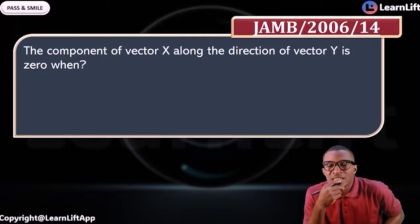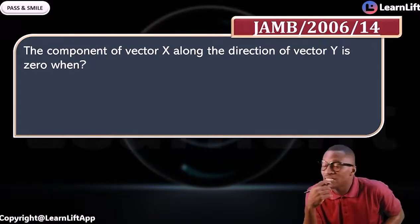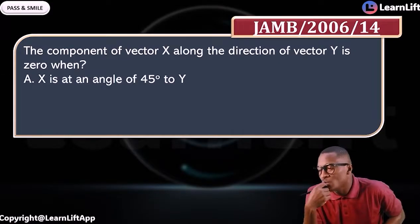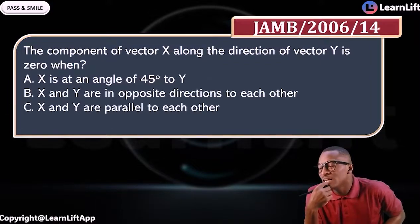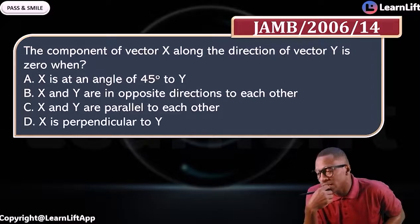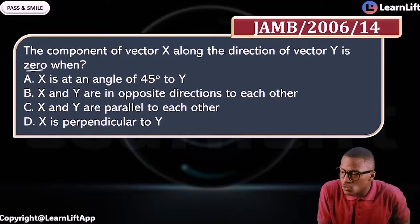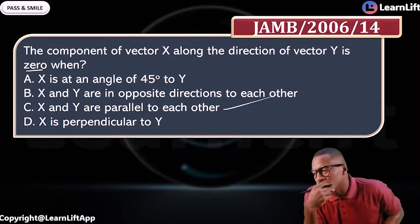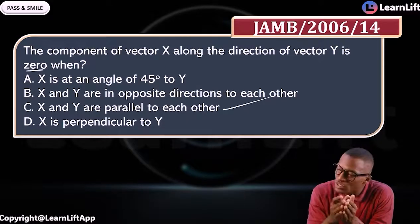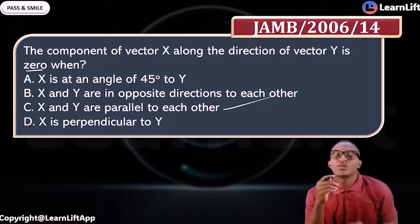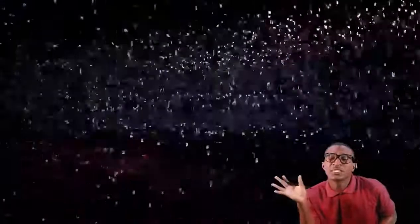JAM 2006 question 14: 'The component of vector X along the direction of vector Y is zero when?' A: X and Y angle is 45°, B: X and Y are in opposite directions, C: X and Y are parallel to each other, D: they are perpendicular. If the component is zero, it means they are parallel to each other, making option C the answer.